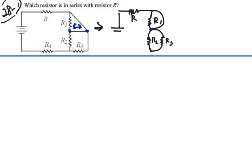So with this point right here, it's clear that R2 and R3 are actually in parallel. And then we have R4 down here.